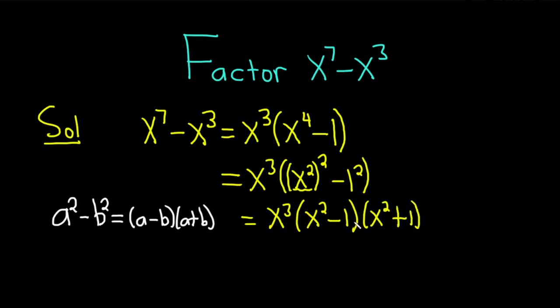Again, it's a minus b, a plus b. x squared minus 1, x squared plus 1. And then we can use the difference of squares formula again. Again, x squared minus 1, you could think of it as x squared minus 1 squared.